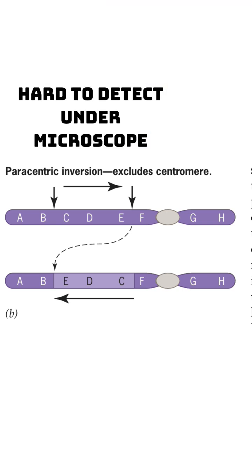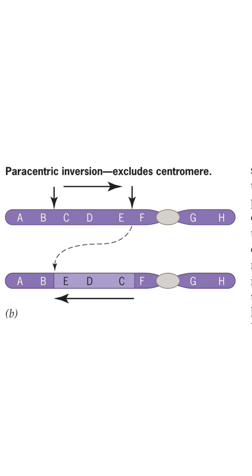If an acrocentric chromosome acquires an inversion in which both breaks are in the chromosomal long arm, that is a paracentric inversion, and the morphology of the chromosome will not be changed.